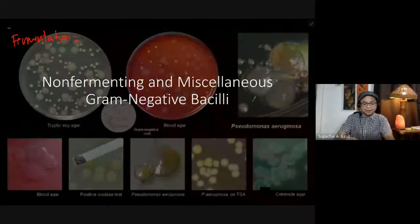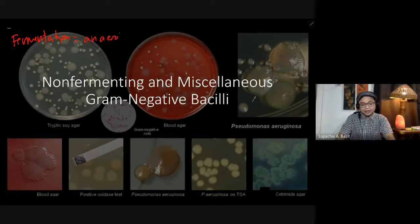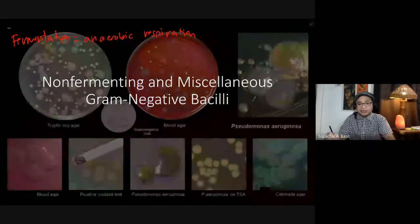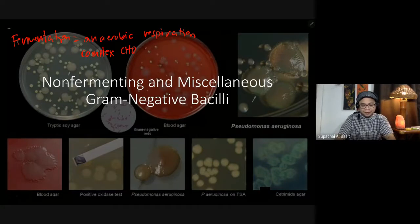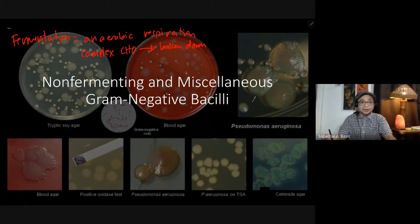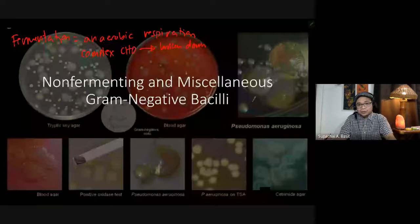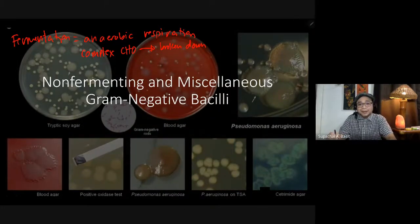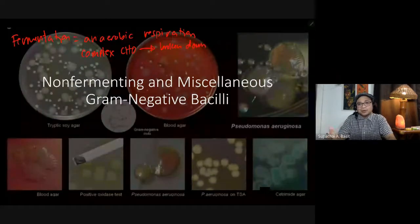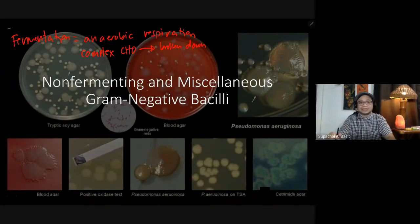When we say fermentation, we are referring to anaerobic respiration — meaning it is devoid of oxygen. During anaerobic respiration, complex carbohydrates are broken down into simpler forms. For example, polysaccharides are broken down to monosaccharides. Some bacteria can be identified based on their ability to ferment glucose, lactose, or maltose.